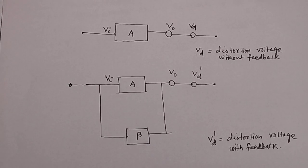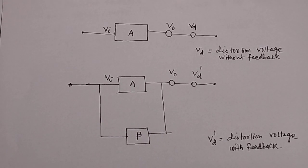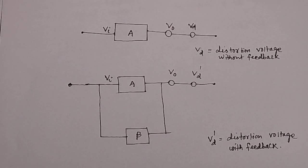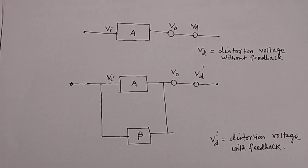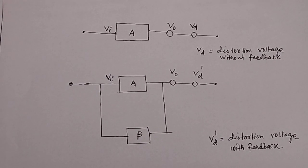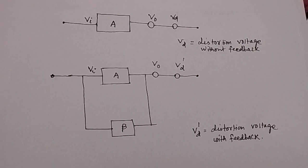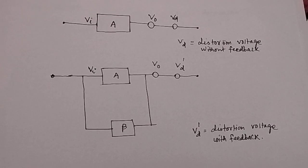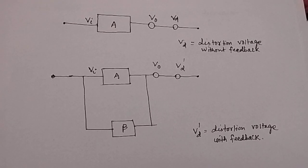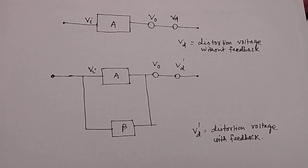These are very important questions in examinations: which feedback reduces distortion? — negative feedback reduces distortion. Which feedback increases distortion? — positive feedback increases distortion. I have explained why in negative feedback distortion decreases, and why in positive feedback distortion increases. In the next video, we will discuss the effect of noise on feedback amplifiers — what is noise in an amplifier, and which feedback increases noise.